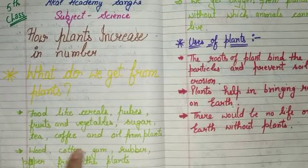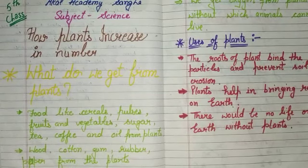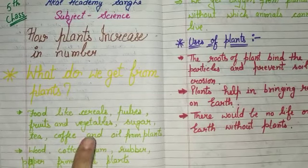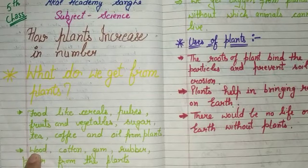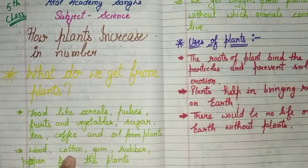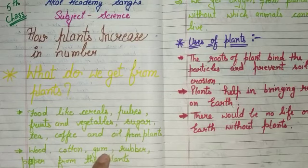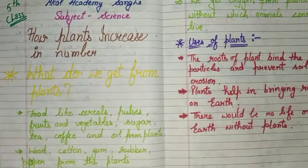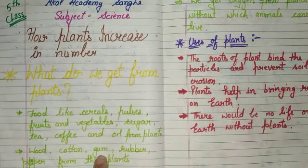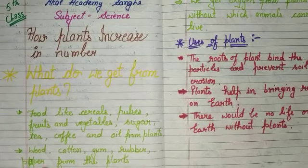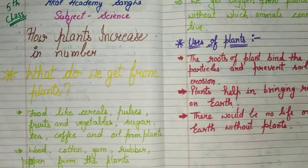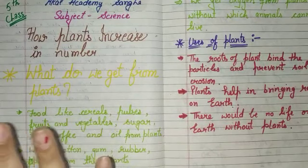We also get wood, cotton, gum, rubber, and paper from plants. Wood is used for making furniture, cotton for making clothes, gum for making medicine, rubber, and paper for various uses — all of these we get from plants.